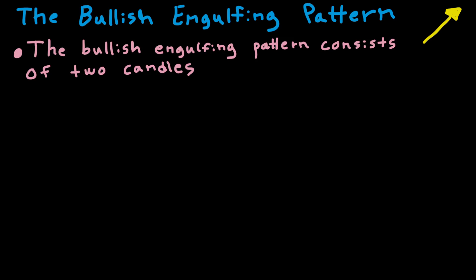The bullish engulfing pattern consists of two candles. The first candle is a red one with a real body — it can have shadows or not. Then the next candle is a green one with a larger real body, and that's the most important part.